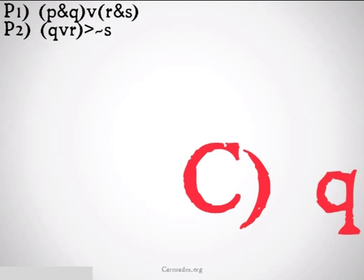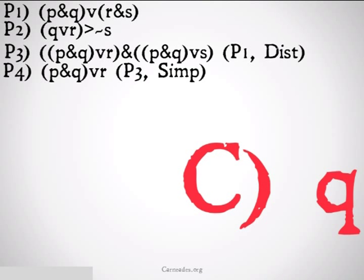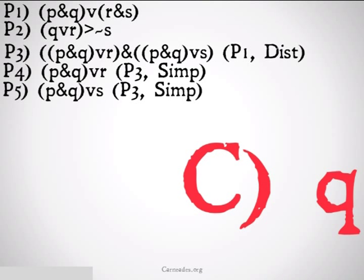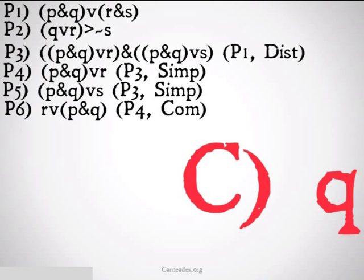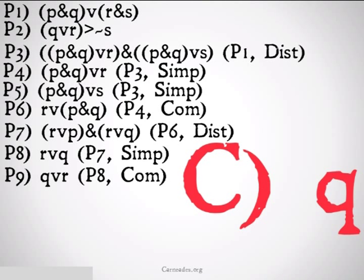So what we're going to do is use a rule we haven't used yet: distribution. We're going to use it in a weird way. We're going to take p and q and treat it as one thing, one variable. We're allowed to distribute it and we get p and q or r and p and q or s. That's premise one distribution. Then premise four we're going to simplify premise three down to just p and q or r. We conclude from premise three also p and q or s. Next up we'll do a commutativity to move that r to the other side and then distribute again. We're going to distribute the r between the p and the q: r or p and r or q. Once again we'll simplify r or q, switch it around with commutativity to get q or r.